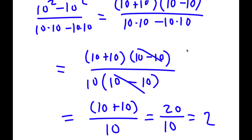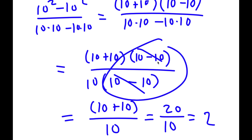Now, there actually is a mistake here, because obviously 0 divided by 0 is not equal to 2. The mistake is right here, where I canceled out 10 minus 10 over 10 minus 10. Well, remember, 10 minus 10 is 0, so this is essentially dividing 0 by 0. And remember, 0 divided by 0 is not 1, so that's why I cannot cancel these two out. That's where the error was.